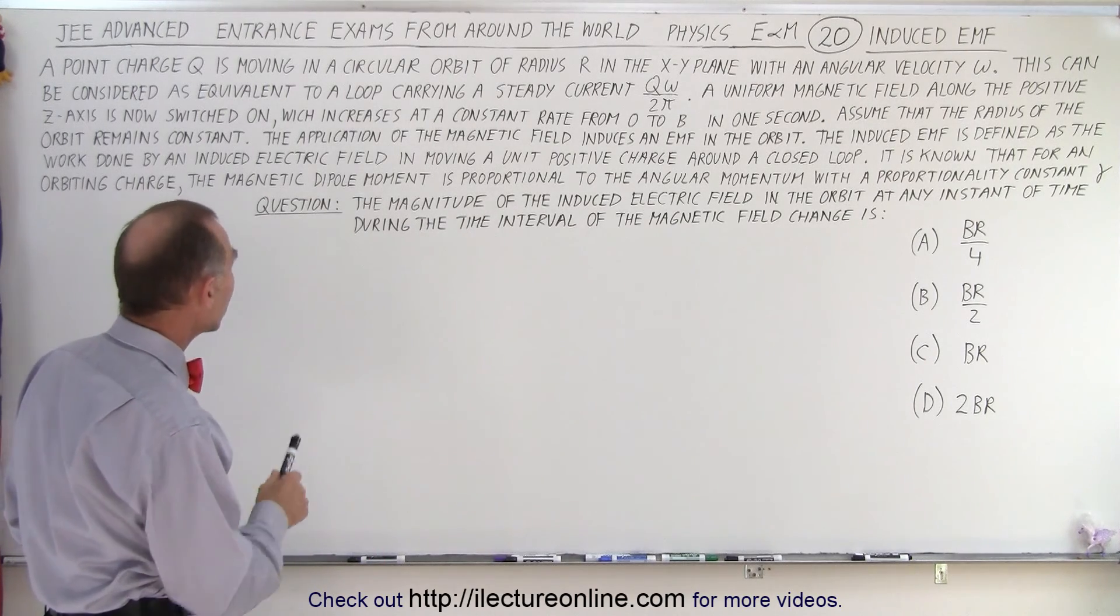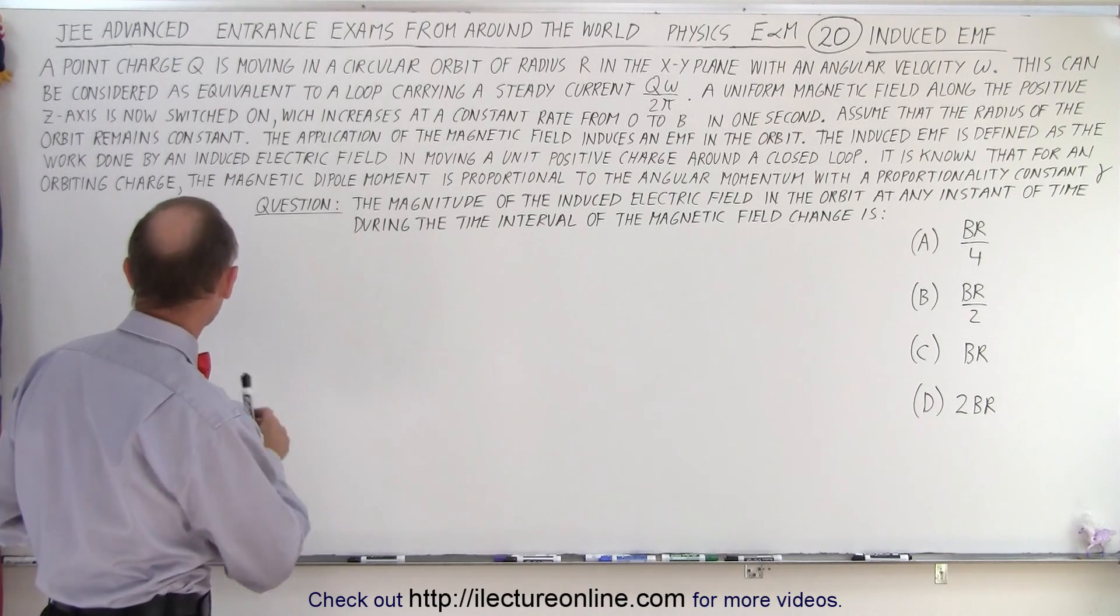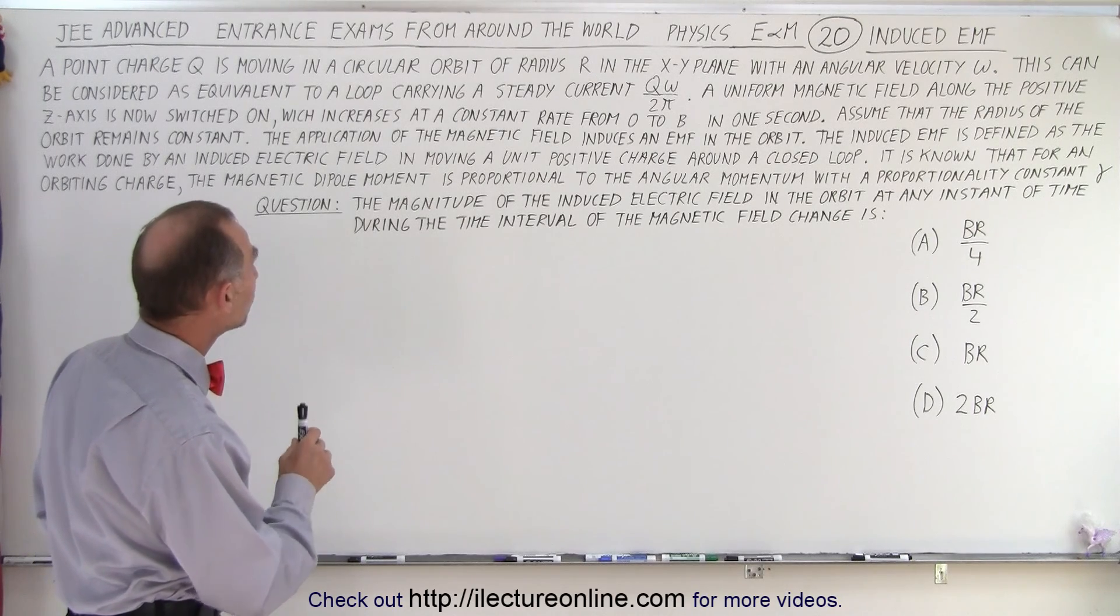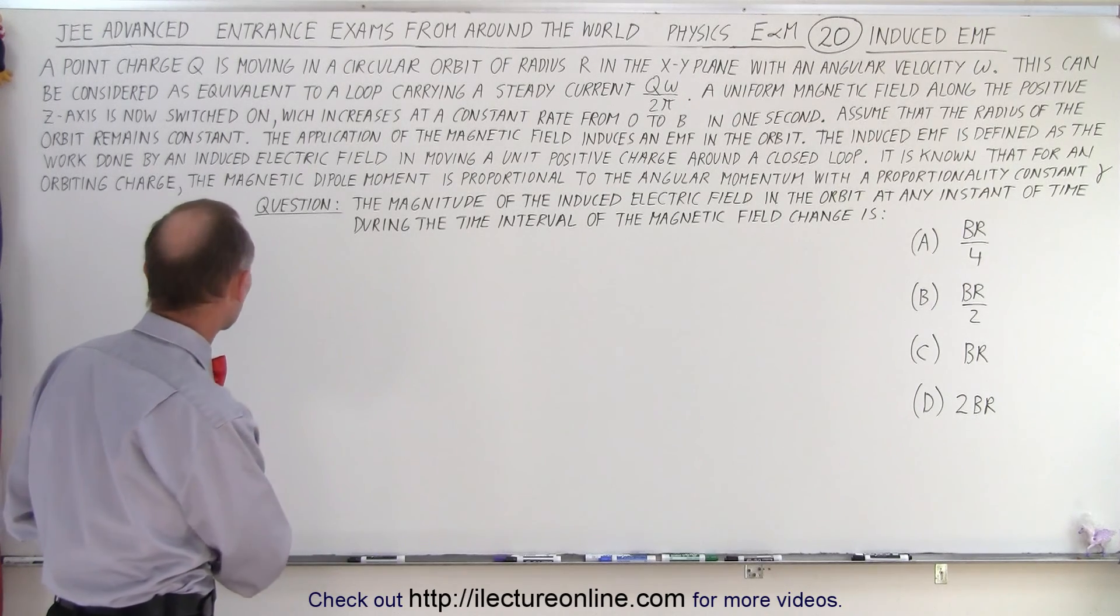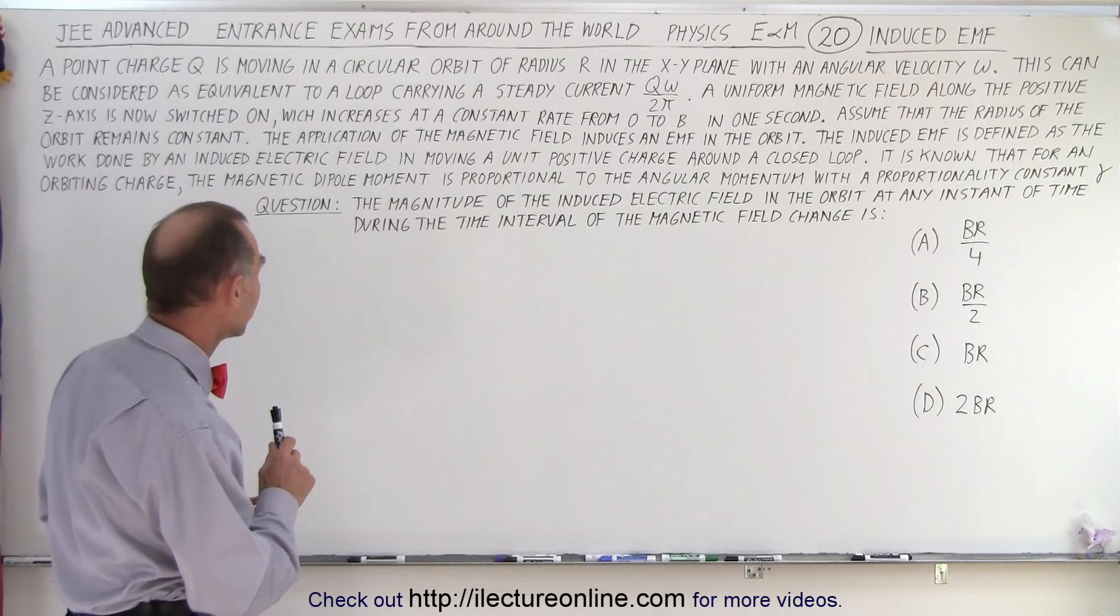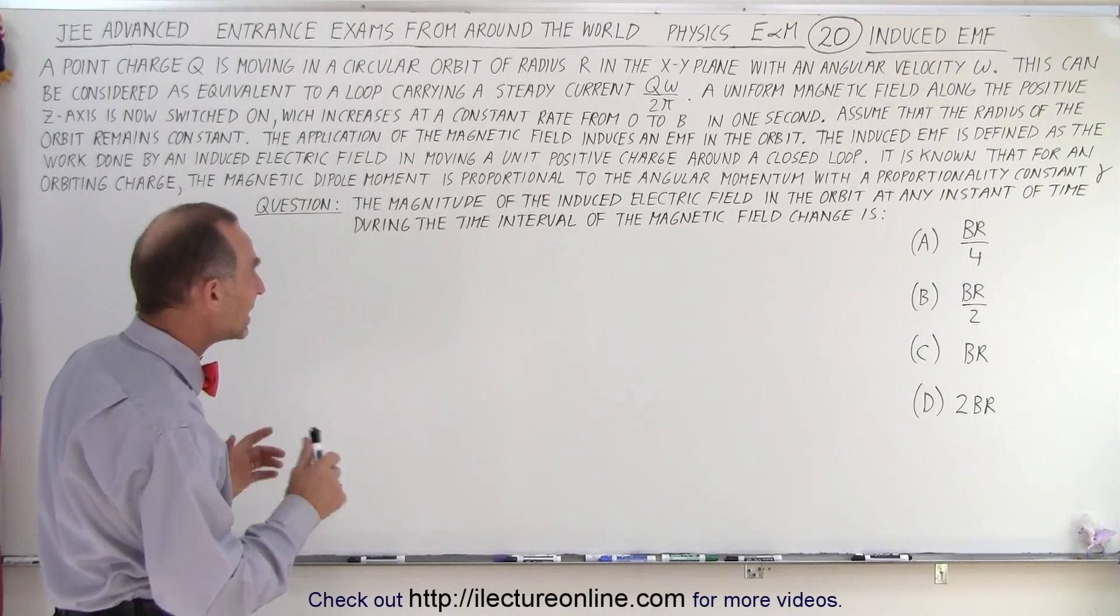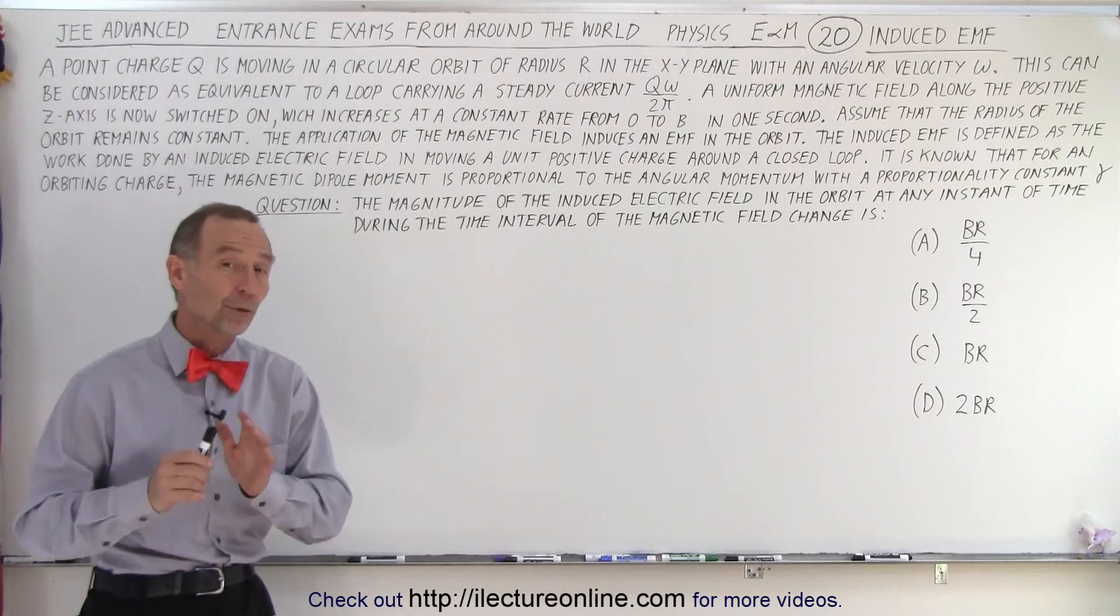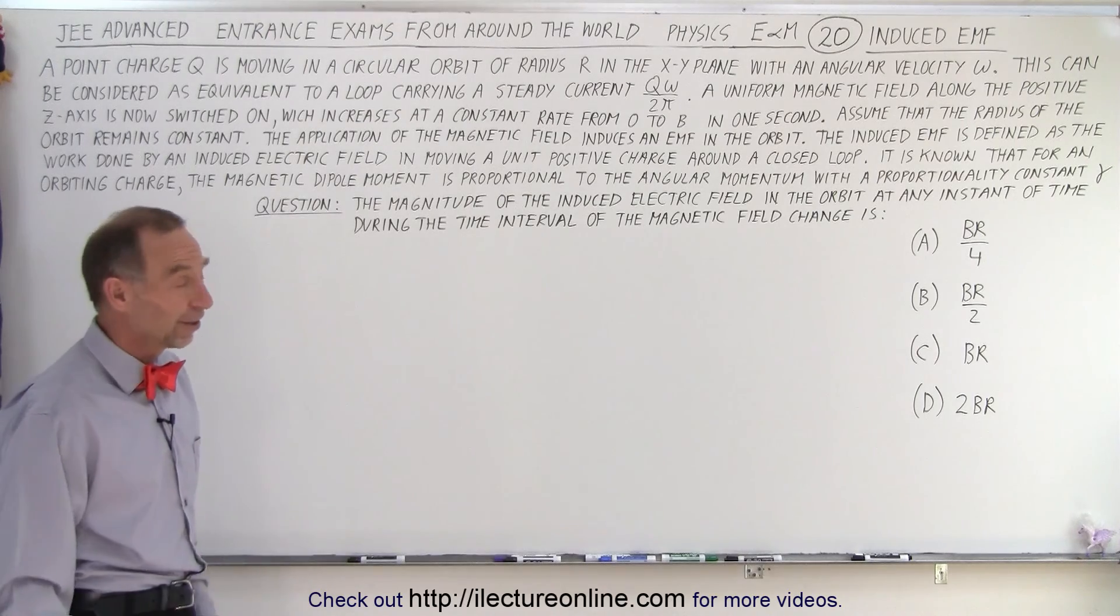Assume that the radius of the orbit remains constant. The application of the magnetic field induces an EMF in the orbit. The induced EMF is defined as the work done by an induced electric field in moving a unit positive charge around a closed loop. It is known that for an orbiting charge the magnetic dipole moment is proportional to the angular momentum with a proportionality constant gamma. Now the question: the magnitude of the induced electric field in the orbit at any instant of time during the time interval of the magnetic field change is, and they give you these four possible answers and in this case only one of them can be correct. Question is which one.